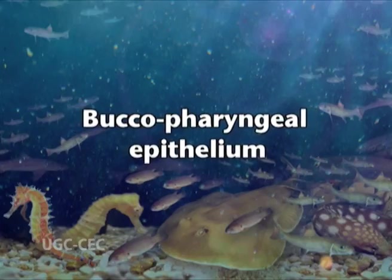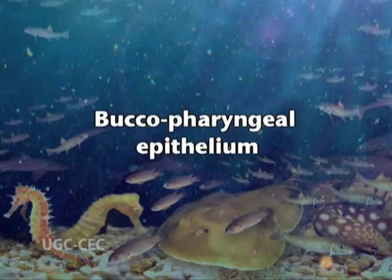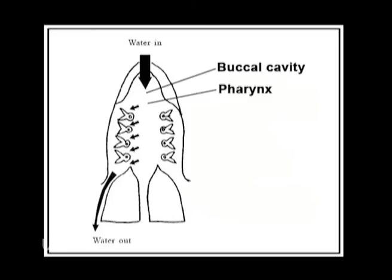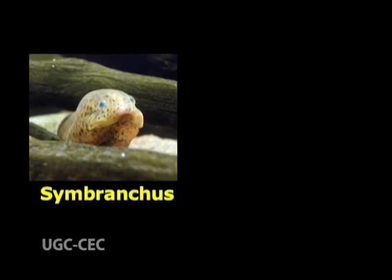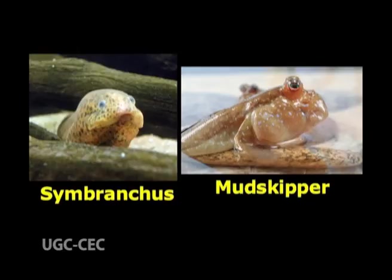Buccopharyngeal epithelium: in fishes, the epithelial lining of the buccal cavity and pharynx is usually highly vascular and permeable to respiratory gases in water. The South American fish Synbranchus and the mudskipper can fill their oral and pharyngeal cavities with air and thus take oxygen directly from the atmosphere.